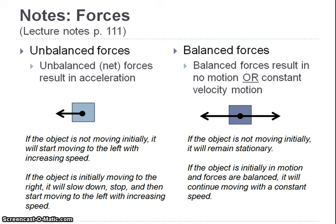Unbalanced or net forces, as a result of Newton's second law, result in acceleration. If the object isn't initially moving, it'll start moving in the same direction as the unbalanced force with increasing speed. If the object is initially moving to the right but the unbalanced force is to the left, the force works against that motion — causing it to slow down, come to a stop, and then reverse direction, moving to the left with increasing speed.